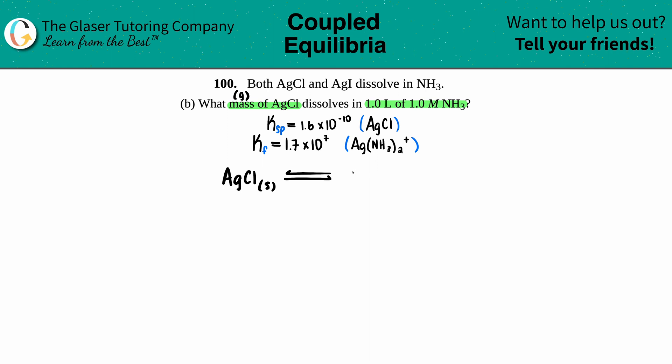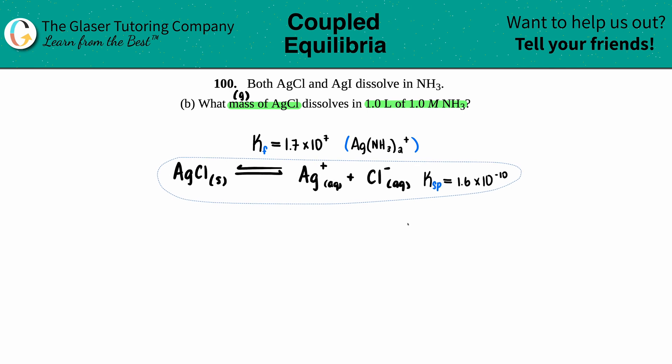We're breaking it down into its two ions: Ag+ aqueous plus Cl- minus. I knew these charges because you could use the crisscross method, or Ag is always plus one and Cl when combined with a metal is always negative one.